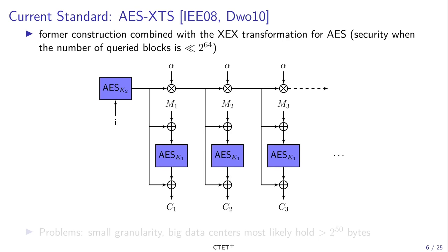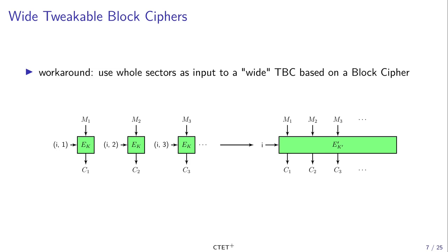This construction actually has two issues. The first one is the small granularity issue that I mentioned in the previous slide. The second one is that big data centers most likely hold more than 2 to the 50 bytes, which is very close to the birthday bound of 2 to the 64. The solution to the granularity issue is to use wide tweakable block ciphers, which use whole sectors as input blocks, even if they are based on a tweakable block cipher or block cipher with small block size.